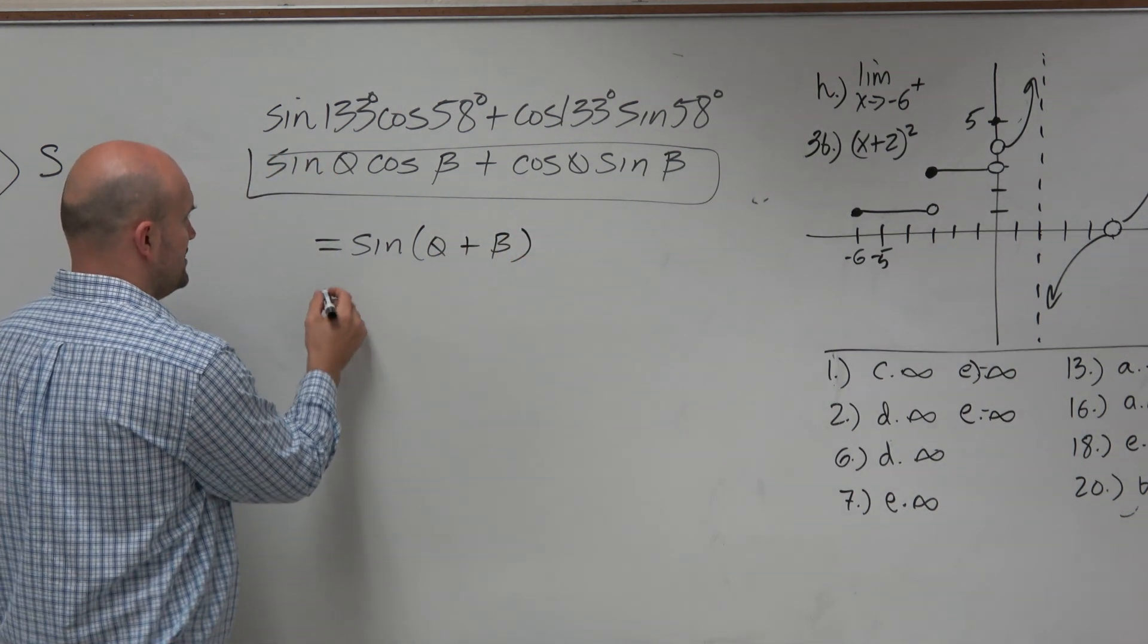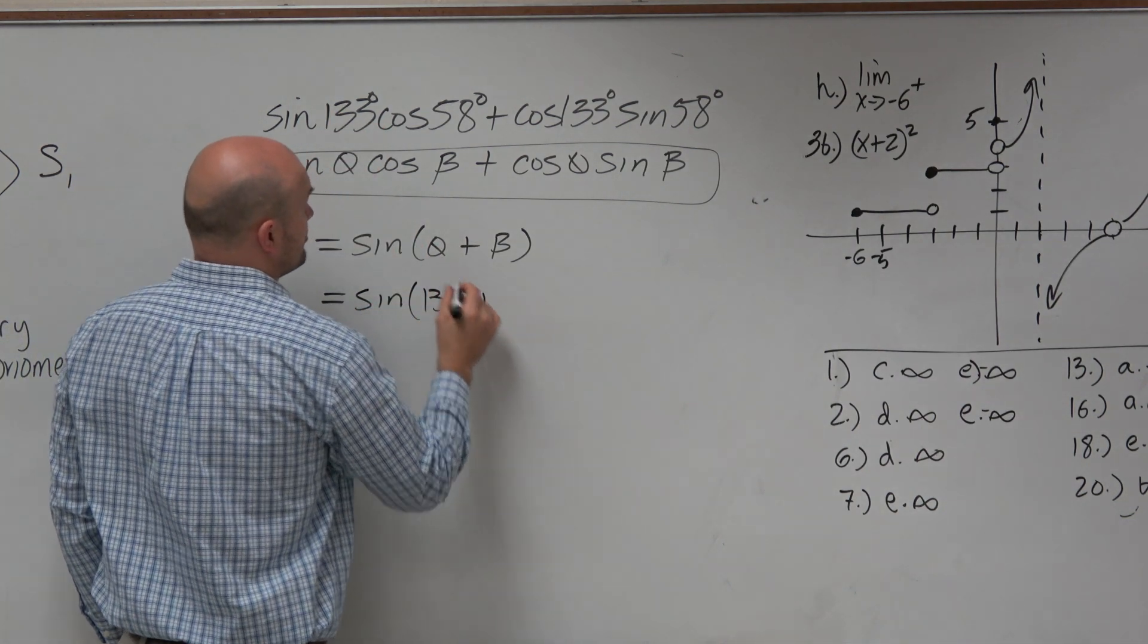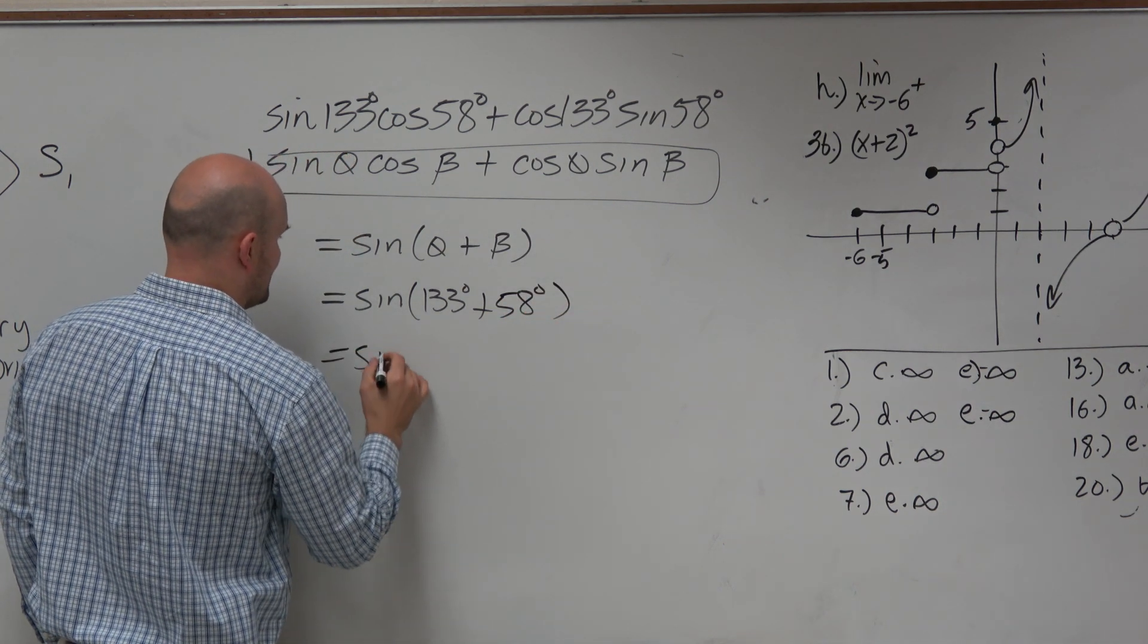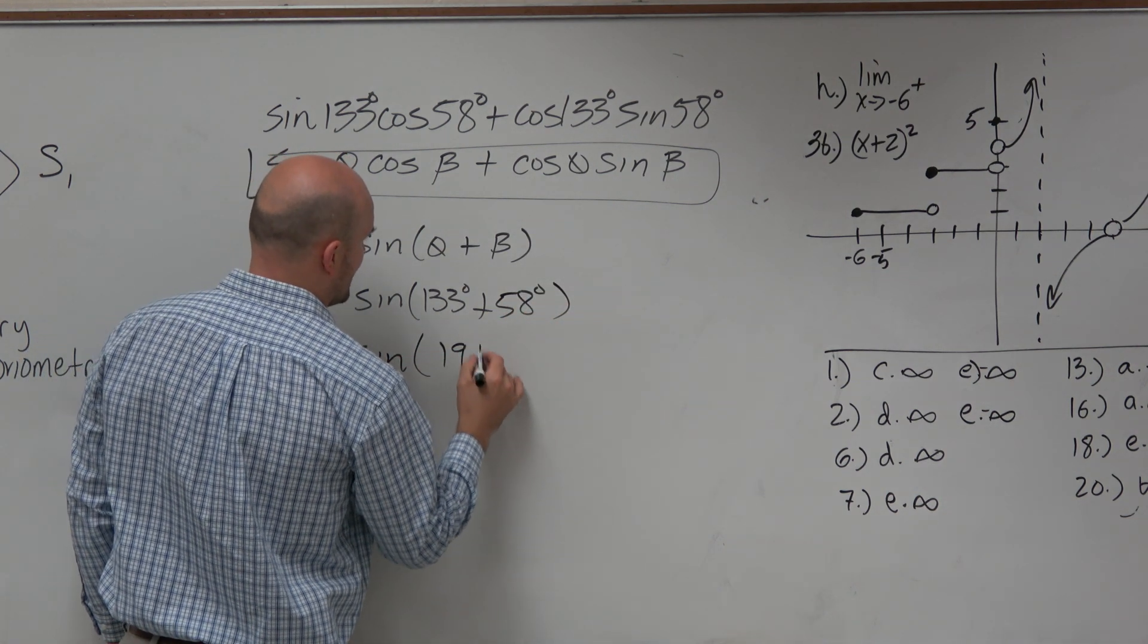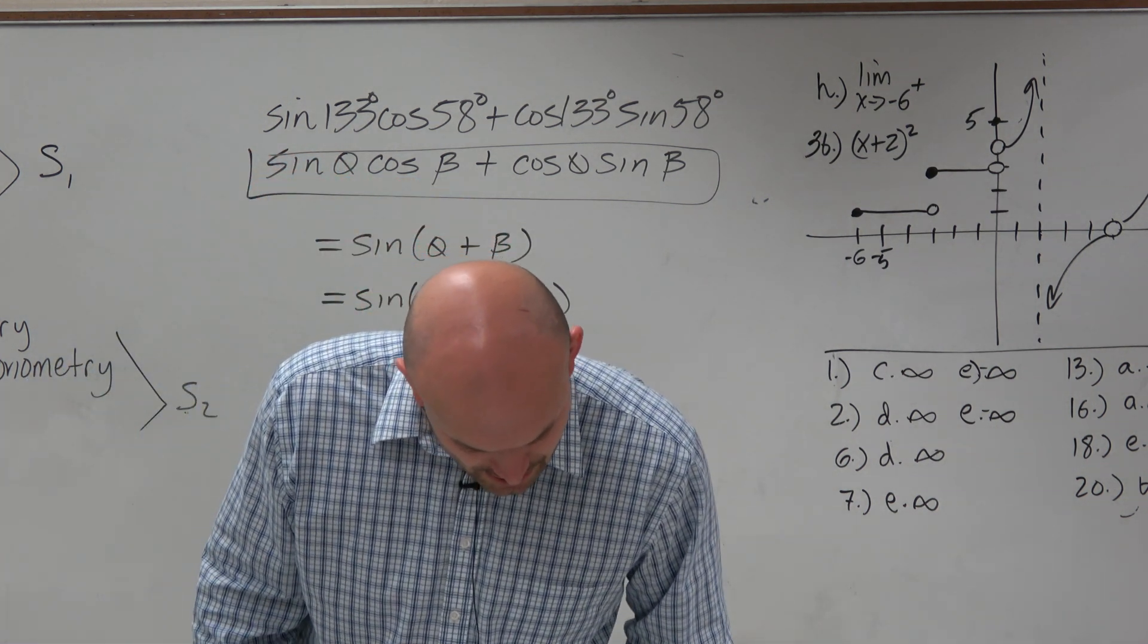So if we know that theta is 133 plus 58 degrees, and we go ahead and add those together, and we get 191 degrees, which is going to be answer choice B.